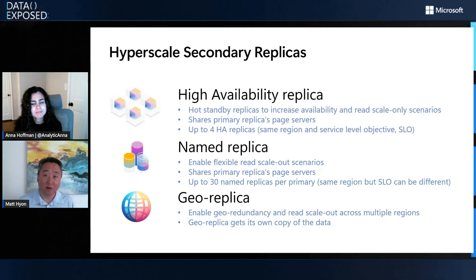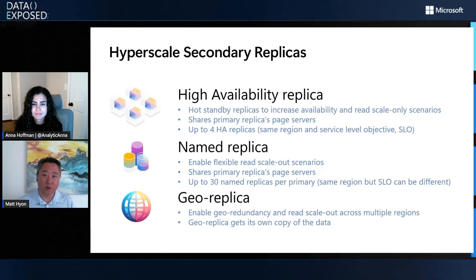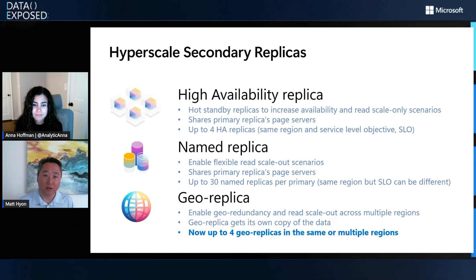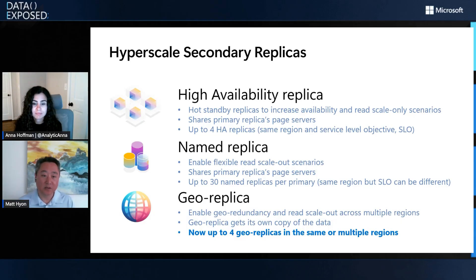Last but not least are the GeoReplicas. These ensure that your applications are resilient to regional faults. The only problem has been for Hyperscale is that we only supported one per primary database until now. So now we have up to four GeoReplicas per Hyperscale primary, and these can be in the same region or different region to give you that flexibility. With all of these combinations of replicas, you can really fine-tune how you want to deliver your workloads on this highly customizable database.